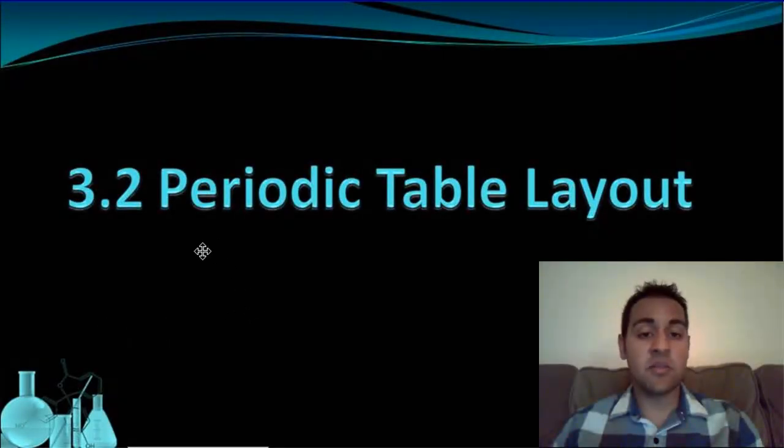That wraps up our lesson on the periodic table layout. We talked about groups and families. We talked about how you can determine valence electrons from the group number. And we also talked about what some of the names of those groups are. Any questions you have from this lesson, make sure you write them down in your notes and bring them with you to class.